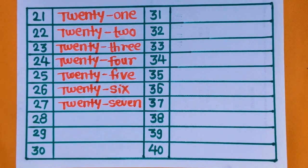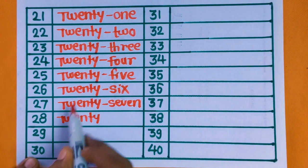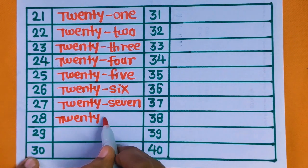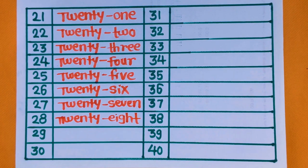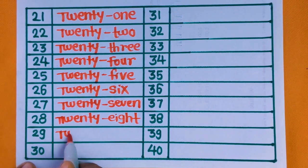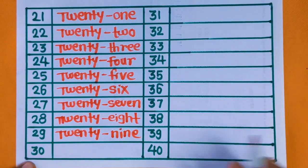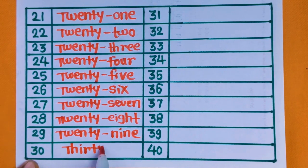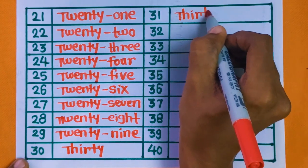Next is 28 — TWENTY EIGHT. 28. Next is 29 — TWENTY NINE. 29. 30 is THIRTY. 30.